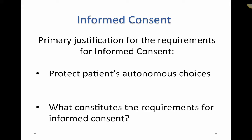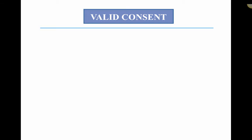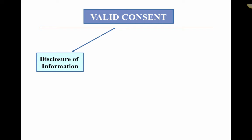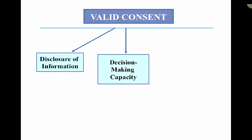What constitutes the requirements for informed consent? Let's review the requirements for a valid consent. First, there needs to be adequate disclosure of information by the healthcare team. Then, one needs to ensure that a patient has decision-making capacity. So, what are the elements of decision-making capacity?